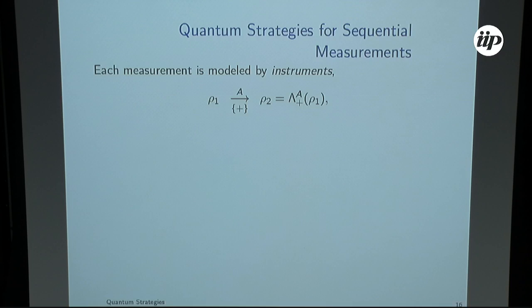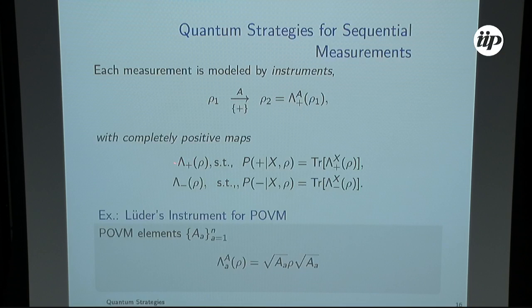The model for sequential quantum measurements, I will use the notion of instruments that associate to each measurement a completely positive map that we take based on the measurement I choose. The result would take me to another state that's normalized such that these maps are completely positive. The probability of the outcome is just the trace over these new states. For example, a more common instrument for POVMs is the Lüders. You just take the square root of these POVM elements to update your state, and this trace gives you the probability.